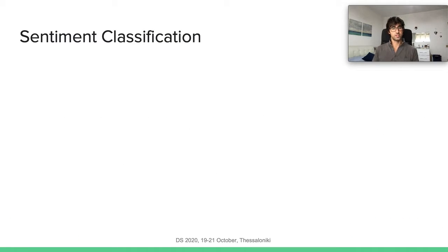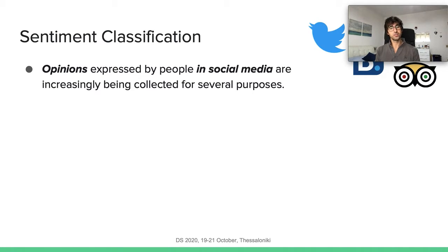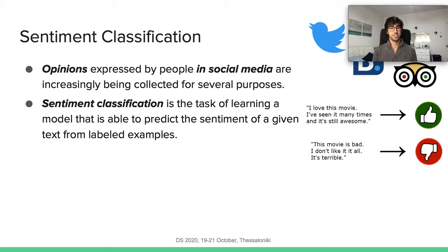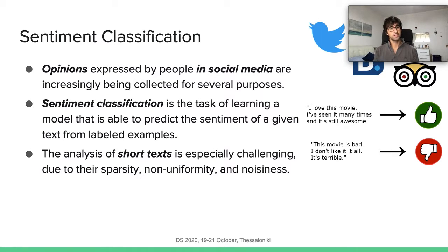What is sentiment classification and why is it important? Opinions nowadays are widely expressed in social media for many different purposes, and sentiment classification is the task of learning a model which is able to predict the sentiment of a given text. The problem with sentiment classification, especially with respect to social media, is that the texts under analysis are generally very short, sparse, non-uniform, very different from each other, and full of noise.